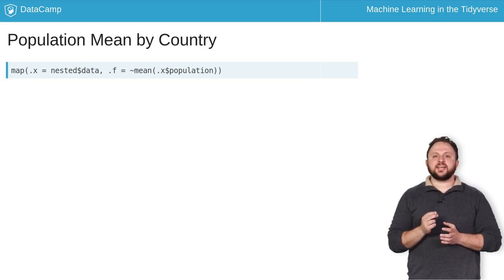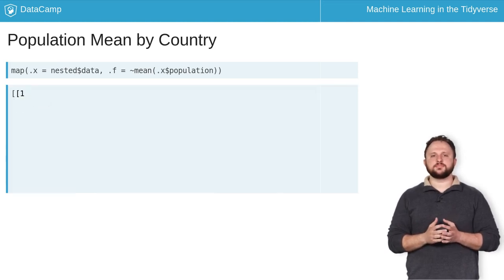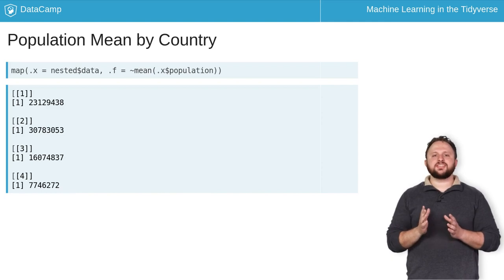Remember that the .x here acts as the placeholder for each element of the list. Since you know that this list contains data frames, and you want to calculate the mean of the population column from each data frame, you can refer to the placeholder the same way you would working with a single element. The result of this function is a list of population means for the 77 countries.